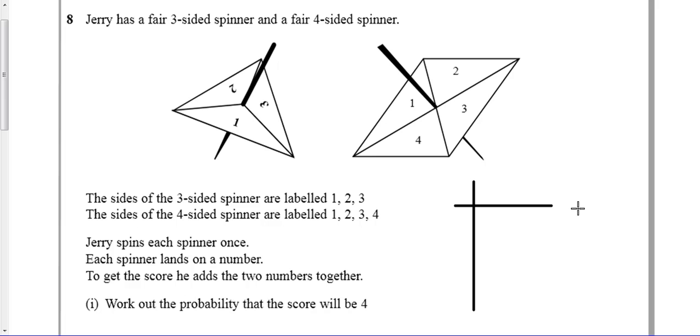I'm going to draw the diagram here and I'm going to add the scores. If we call this spinner number 1, possible things I could get are 1, 2, and 3. And on spinner number 2, I could get a 1, 2, 3, or a 4.